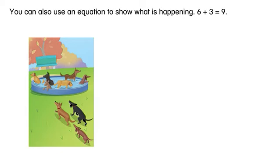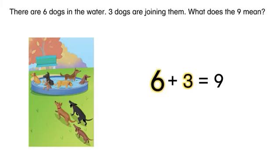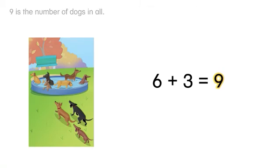You can also use an equation to show what is happening: six plus three equals nine. What does the six in the equation represent? What does the three in the equation represent? There are six dogs in the water. Three dogs are joining them. What does the nine mean? Nine is the number of dogs in all.